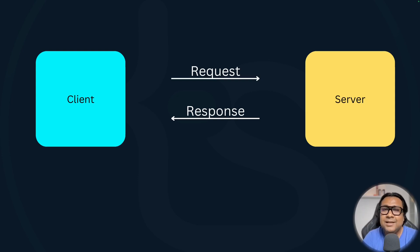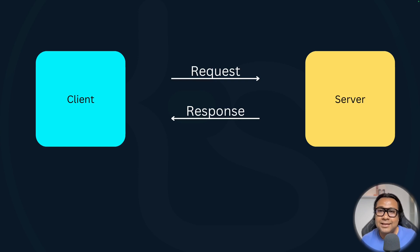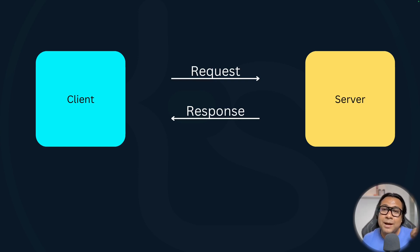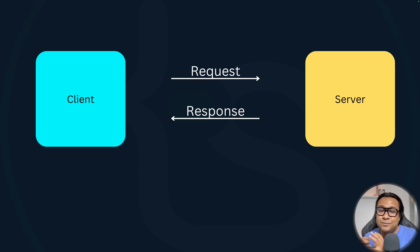Before we get into server components and server actions and their differences, let's understand the client-server model at a high level. A server is known for serving something, and a client is known for requesting something. The client is nothing but browsers, handheld devices, or anything that is user-interfacing and wants to act on data produced by services that reside on the server. For example, if you need a user list to show on your browser, the user list might reside in a backend database, and a server fetches it for you and passes it to the client when the client requests it.